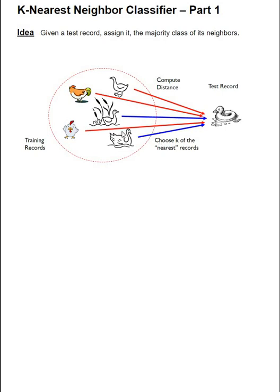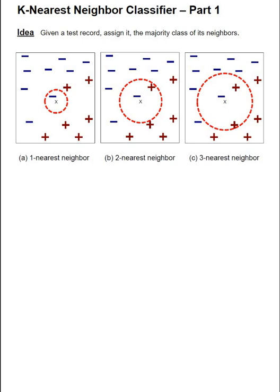And then the third step is we choose K of the nearest records. We could choose only one, that is also feasible, but here we choose K of the nearest records and we'll understand why in a minute.